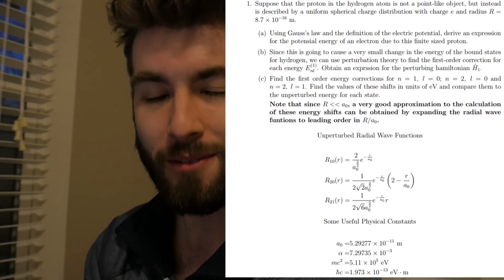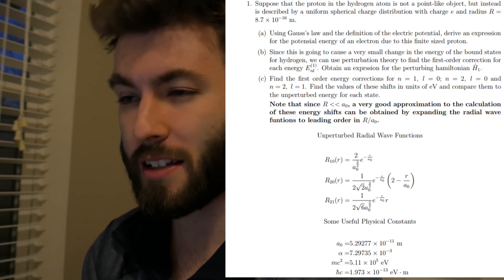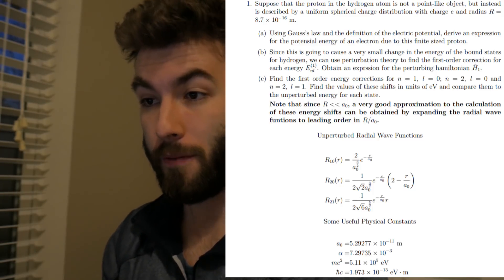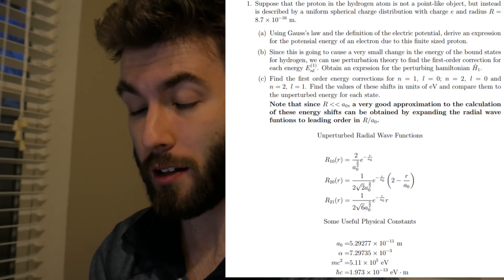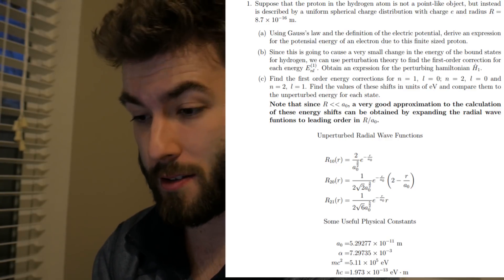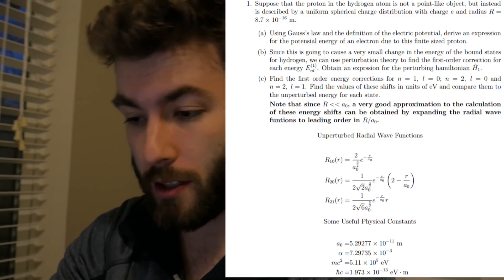So normally in quantum what you do is you approximate the size of the proton as being infinitely small and that gives you an exact solution for your energy. This is saying if you don't make that approximation, it's wanting us to eventually find the corrections to the energy. So the first problem, if you've had any electrodynamics, can be solved, you're not using quantum at all, it's purely just Gauss's law.